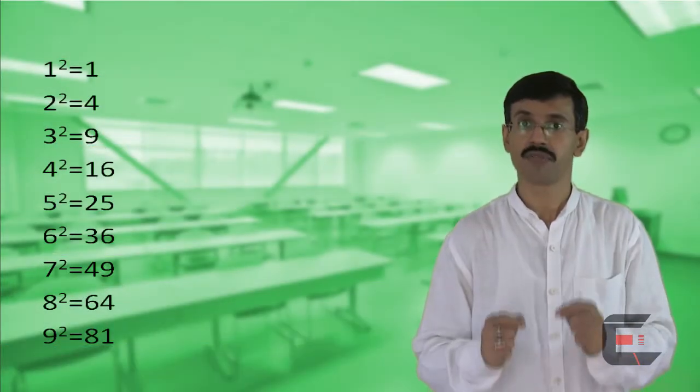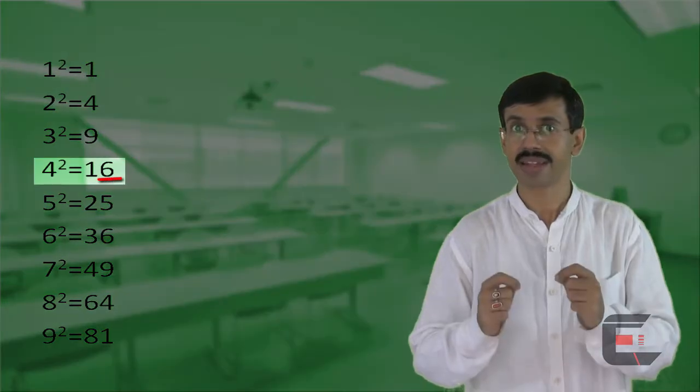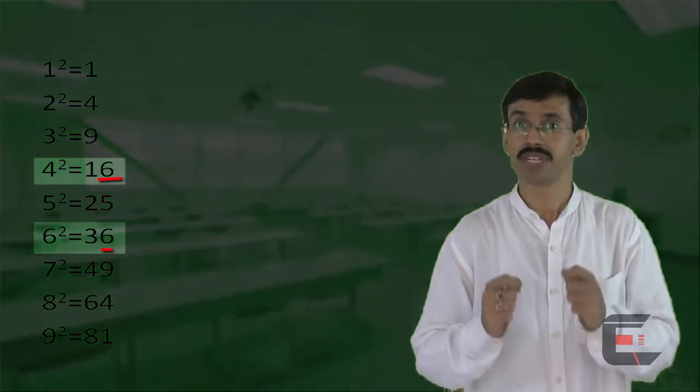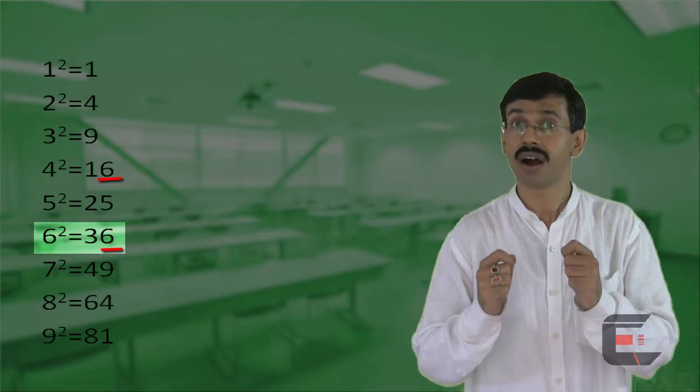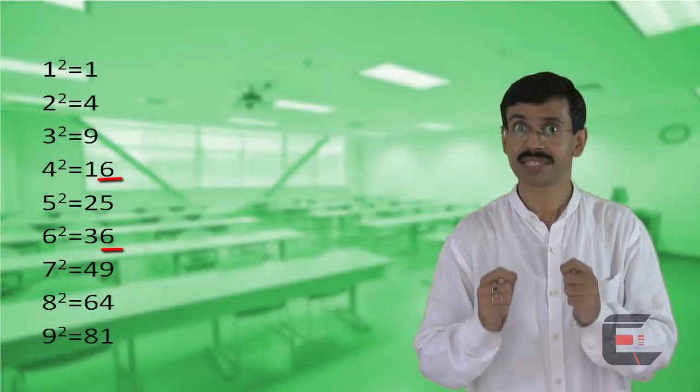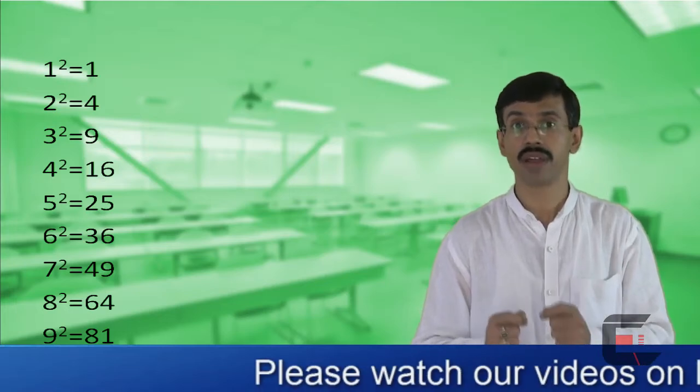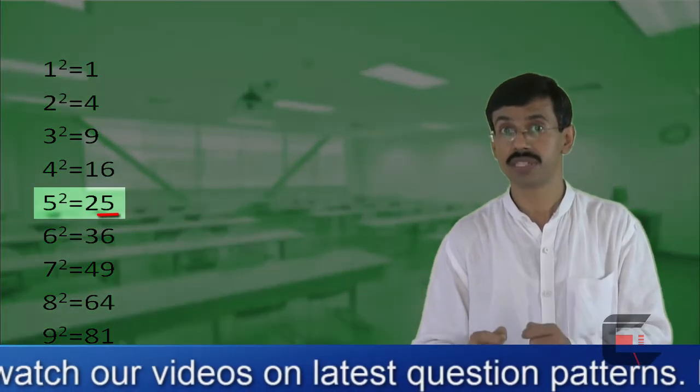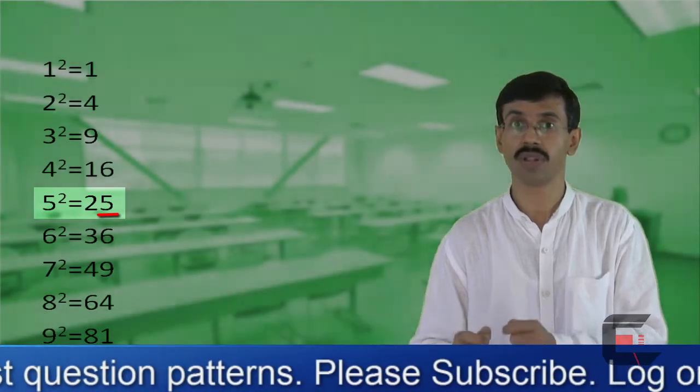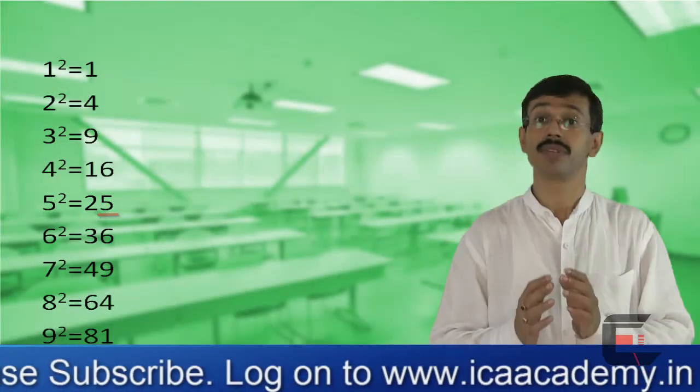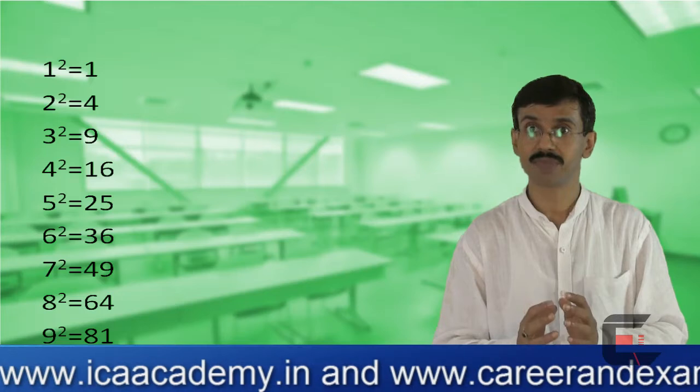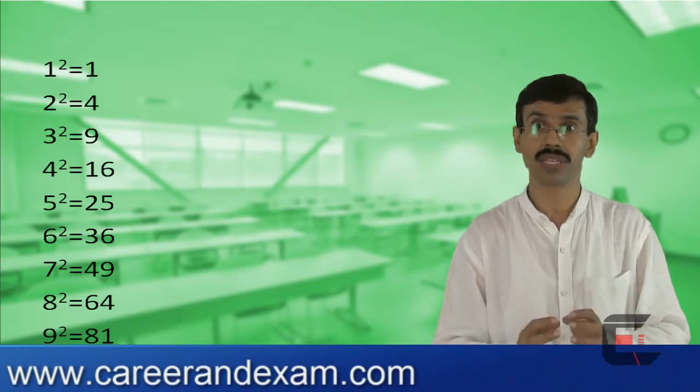Similarly, for 4² and 6², the units digits of the answers is 6. 5 is a special case where when you square 5, the units digit of the answer is always 5. To understand what this means and why we are doing this, let's take the example of 2² and 8².